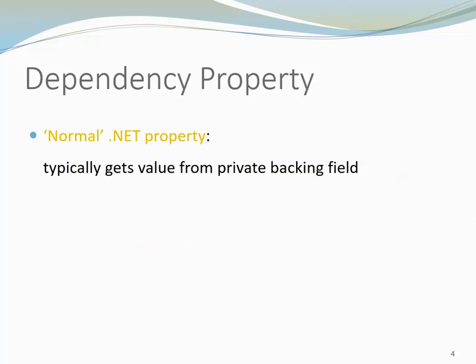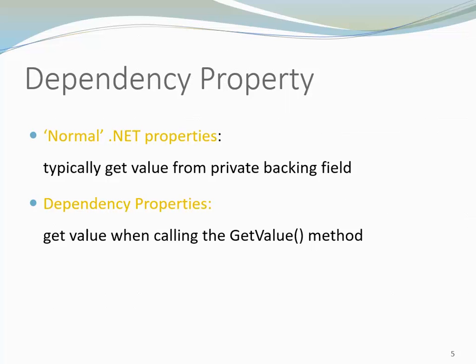Let's compare Dependency Properties with Normal Properties. Normal Properties typically get their value from private backing fields. However, Dependency Properties get their value from calling the GetValue method.